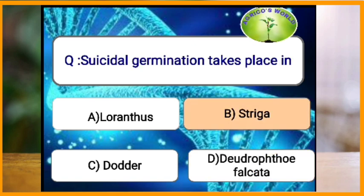Suicidal germination takes place in which organism? Suicidal germination is the process which takes place in Striga, in which the seeds of the weed germinate due to chemical signals given by the host plant. These chemical signals are strigolactones such as strigol and orobancol. Suicidal germination is the process where germination occurs in the absence of the host by use of strigolactones.